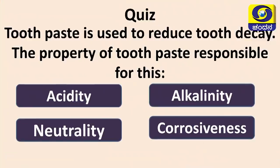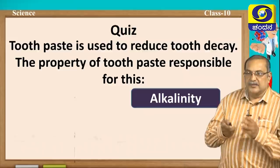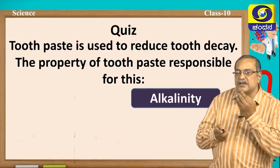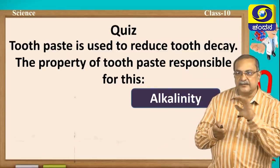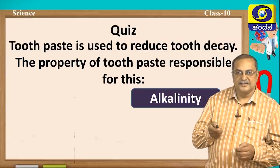Question 2: Toothpaste is used to reduce tooth decay. The property of toothpaste responsible for this is: acidity, alkalinity, neutrality, or corrosiveness? The answer is alkalinity. Because of its alkalinity — that is, its basic nature — the toothpaste acts on the acid present in the mouth, neutralizes it, and prevents tooth decay.